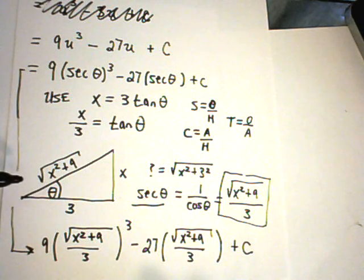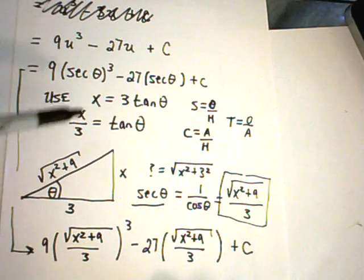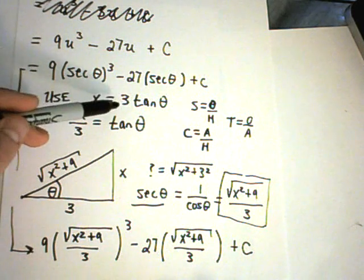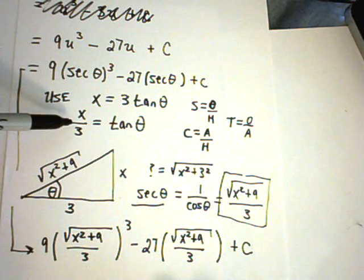The idea again is we set up the right triangle. We use the fact that x was 3 tangent theta. So simplifying, we get tangent theta is x over 3.